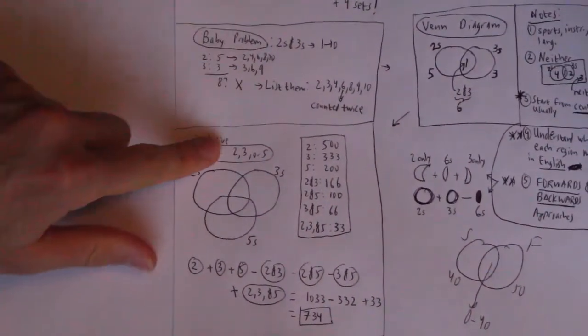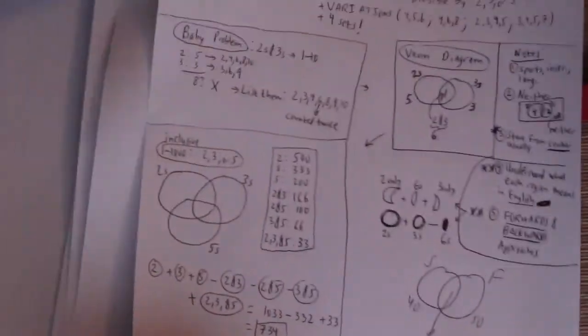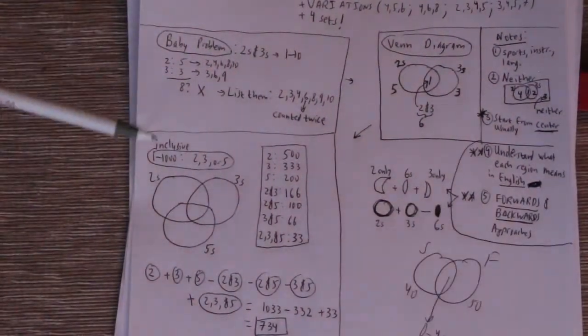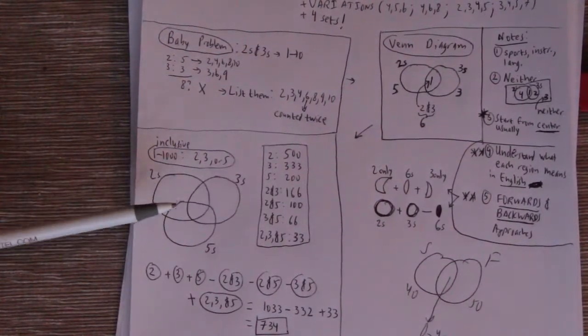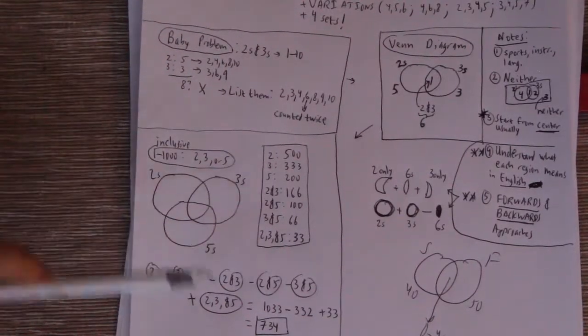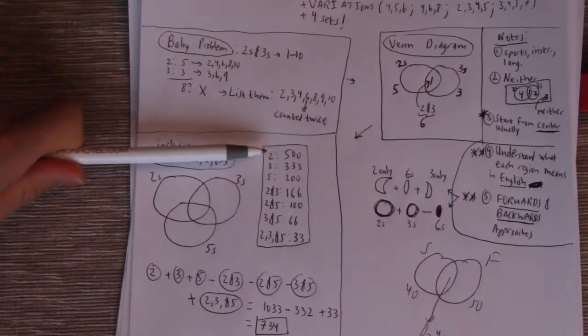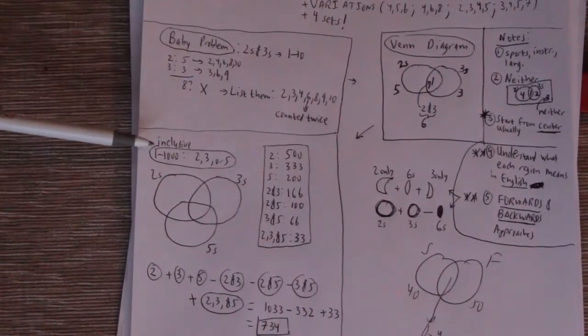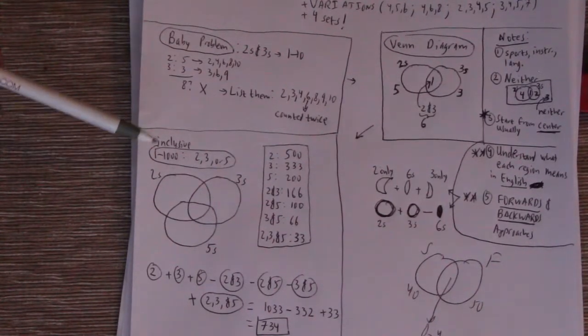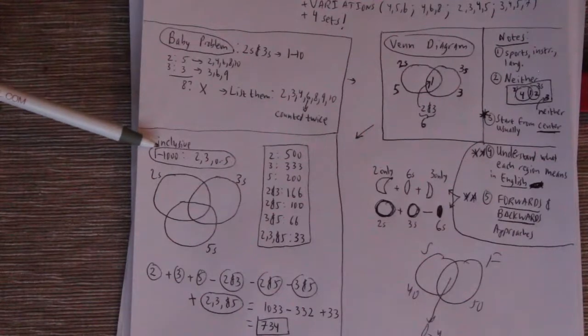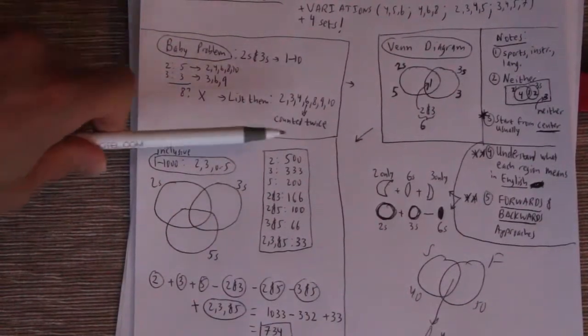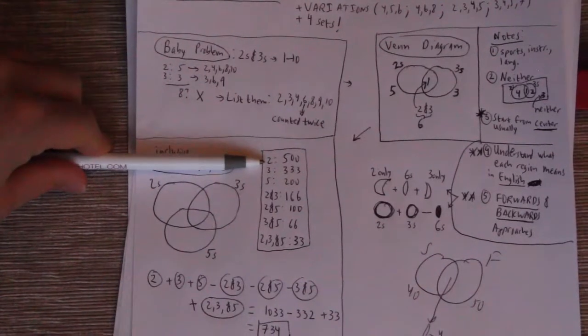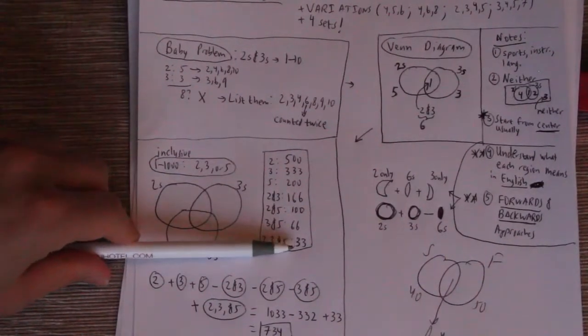So now we have twos, threes, and fives. So we're going to have three circles. We have our twos circle, threes circle, and five circle. Now I'm not even going to put numbers in here, but this is to help guide your understanding of what we're doing in this table. So first I'm going to see how many numbers are divisible by two, from one to 1,000 inclusive of one and 1,000. By the way, when you get these problems, you should be sure you're answering the right question. Because if you don't include the bounds or you're not sure whether it includes it, you might be off by one or two.